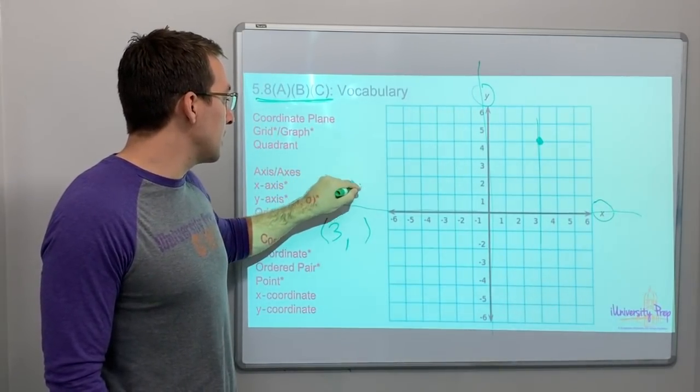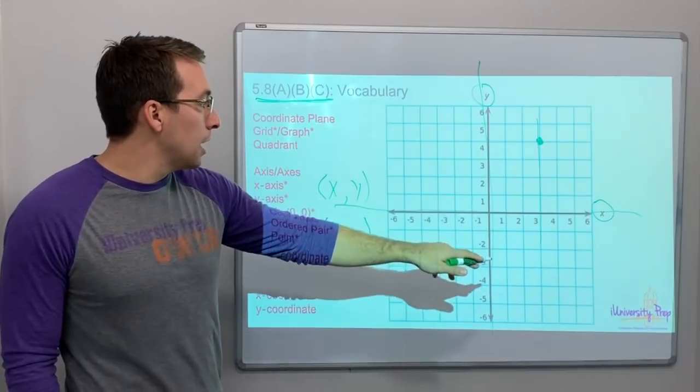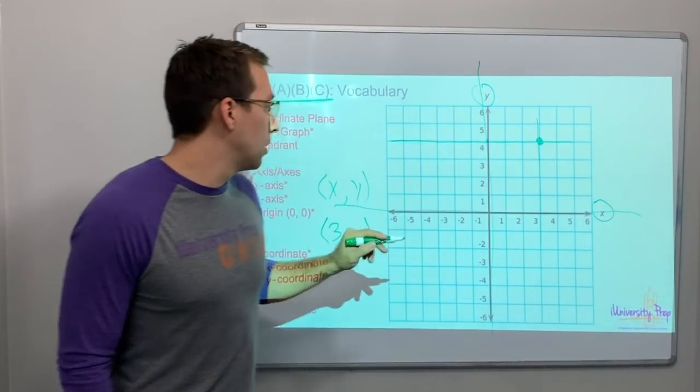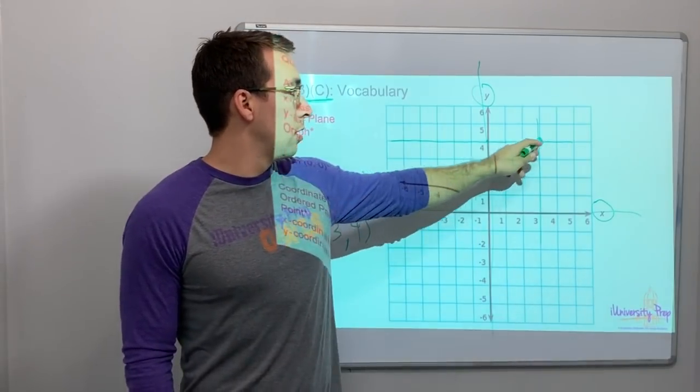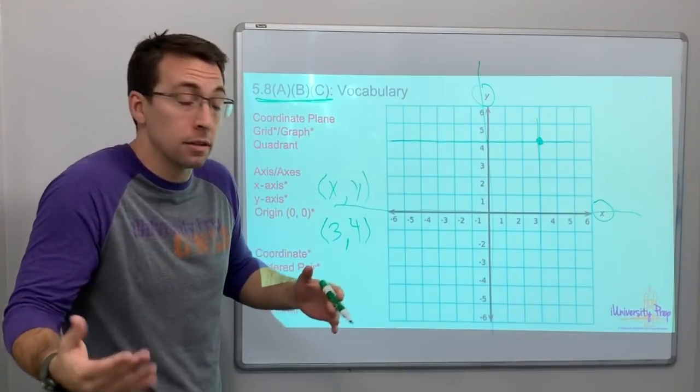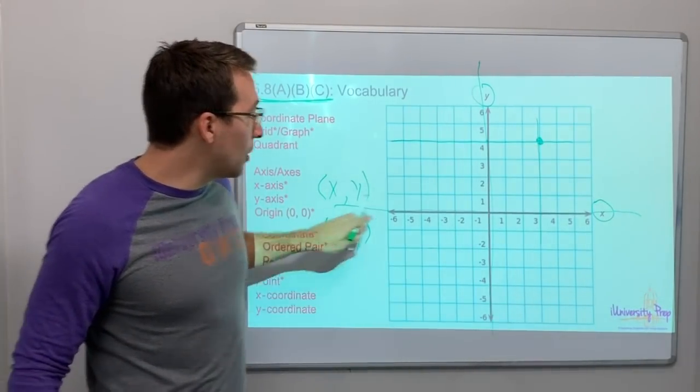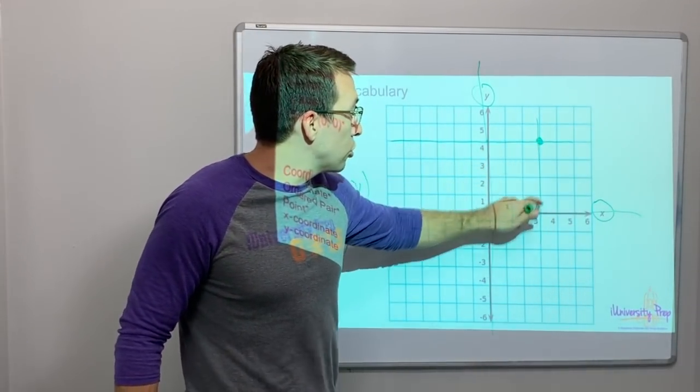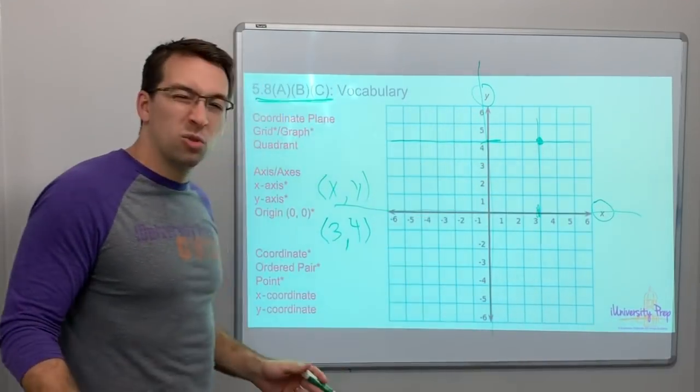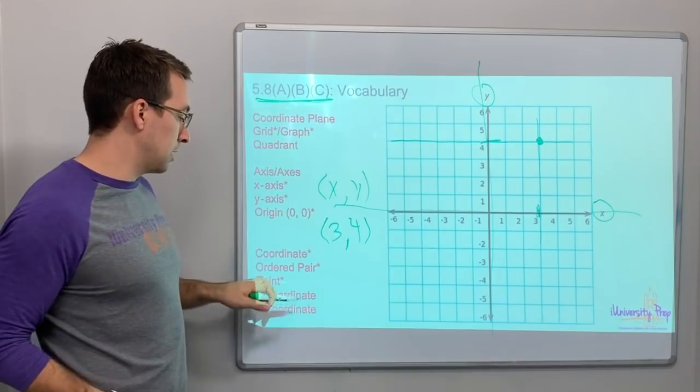The first number is the x-axis, the second number is the y-axis. What does that mean? So let's look at this point right here. Does that line up with the three along the x-axis? Yes it does. So it would be three. This is our ordered pair, X and then Y, three.